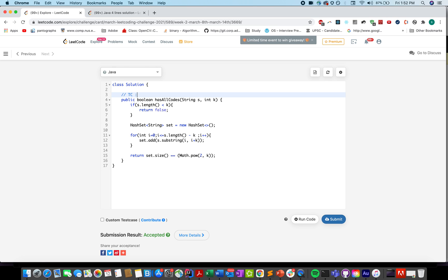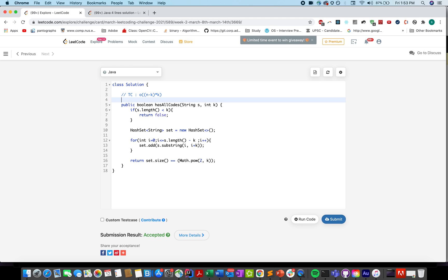The time complexity would be order of n-k because you are generating all the substrings. And then the space complexity is order of 2 rest of the power k. You can improvise this complexity further by instead of using the substring method, you can use a two pointer approach to build those strings. Each time you remove one character from the start, add one character to the end. And this complexity can again be reduced to order of n-k.